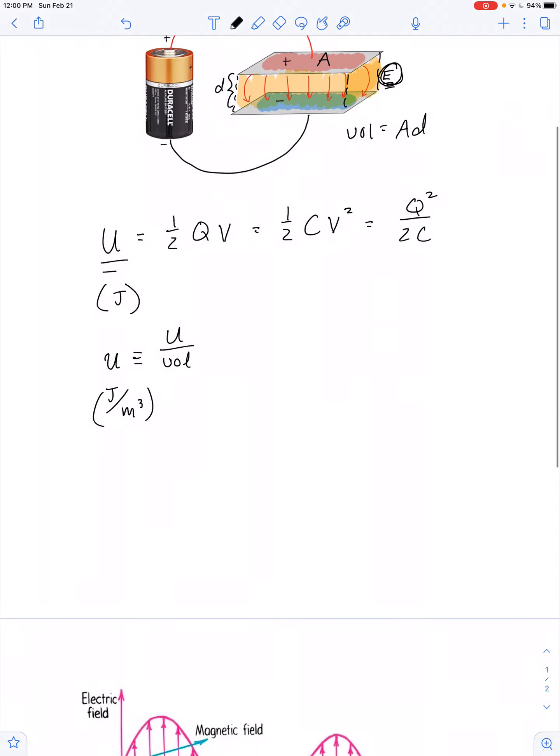So if we wanted to find the energy density for this electric field, we just need to make some substitutions. In place of the potential energy capital U, let's use this expression, one-half cv squared.